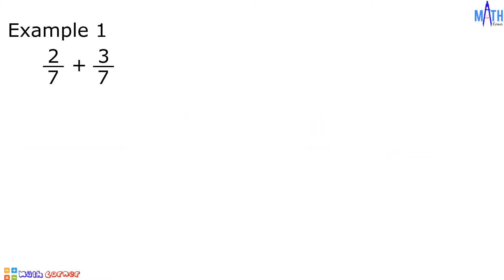Example number 1: 2 over 7 plus 3 over 7. In adding similar fractions, or fractions with the same denominator, we will add the numerators and copy the common denominator. 2 plus 3 is equal to 5 over 7. Since 5 over 7 is already expressed in lowest term, this is the answer.